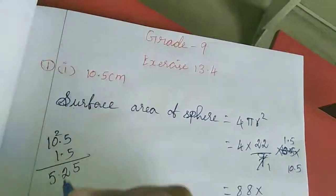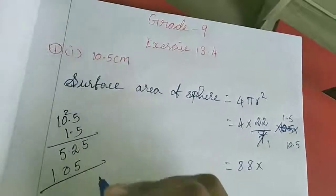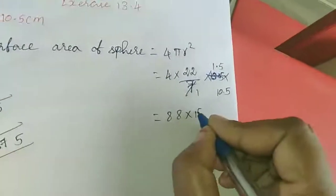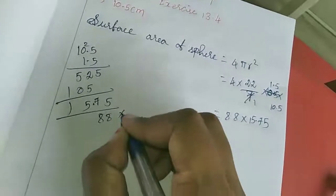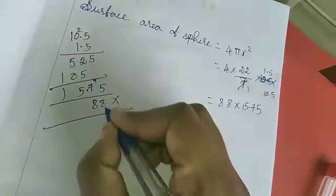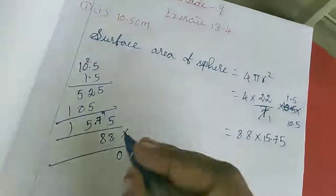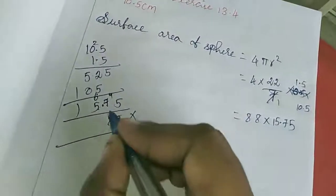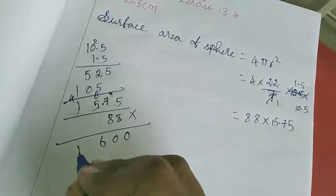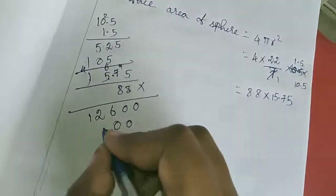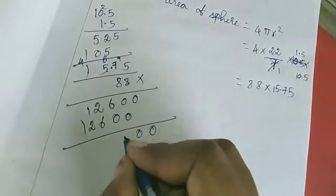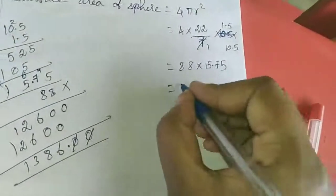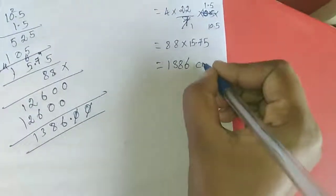Working through the multiplication step by step, the answer for the first sum is 1386 centimeters square.